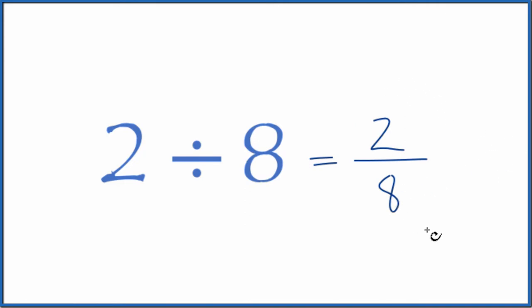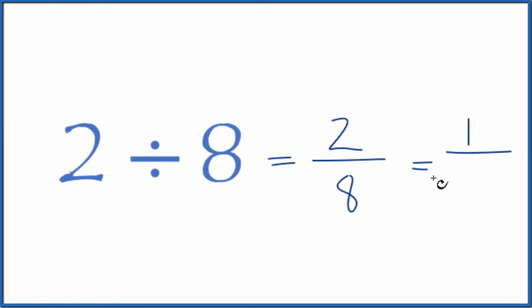We could simplify this. These are both even numbers. We could divide 2 by 2. That gives us 1. 8 divided by 2. That gives us 4.